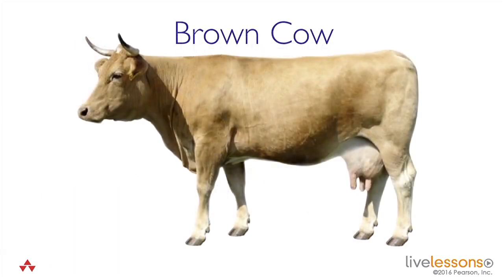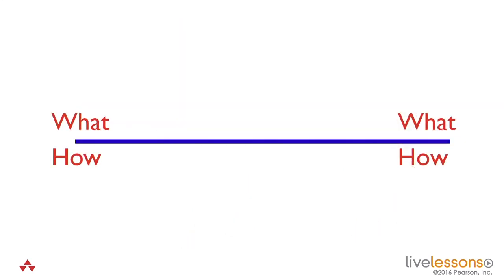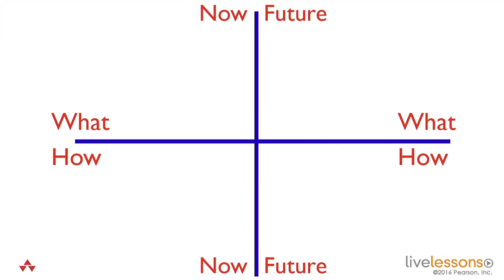I want to carry on and talk about the brown cow model. The model is a way of looking at something. I want to use one line to separate what from how — what being the essence of something and the how being the technological way of achieving whatever it is we're looking at. So the technology is below the line. Above the line is the essence of the problem. I want a second line to separate now from the future, because when you're looking at your processes and trawling for requirements, you're looking at something that is there now, but you also want that to be different in the future. So my vertical line is separating now from the future.